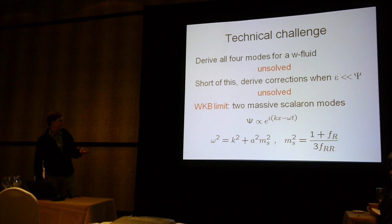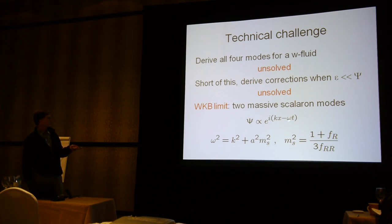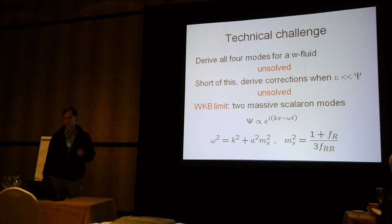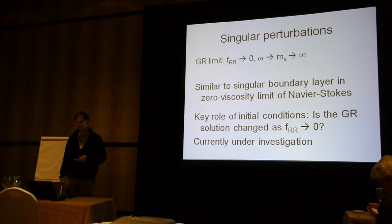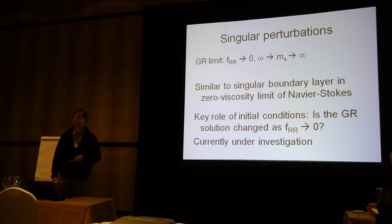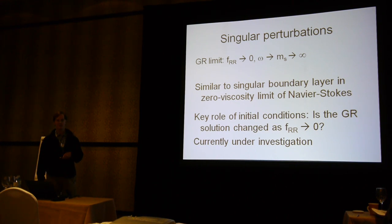There is something peculiar about this. The limit of general relativity is when f → 0, f_R → 0, and f_RR → 0. That is a singular limit of this system, because the frequency goes to infinity. There are two additional modes — essentially the scalaron modes. What I'm saying is that in the GR limit, taking the continuous transformation of f_R to zero, one ends up with infinitely fast oscillations of extra degrees of freedom that don't show up in general relativity — infinite mass particles not present in GR.